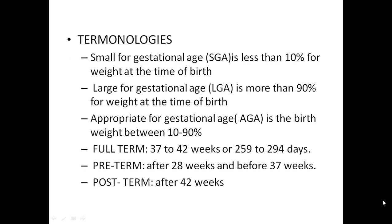Terminologies. Small for gestational age means less than 10th percentile of weight at the time of birth. LGA, or large for gestational age, means more than 90th percentile of weight at the time of birth. Appropriate for gestational age is birth weight between 10 to 90th percentile. Full term is between 37 to 42 weeks or 259 to 294 days. Preterm means after 28 weeks but before 37 weeks. Post-term is after 42 weeks.